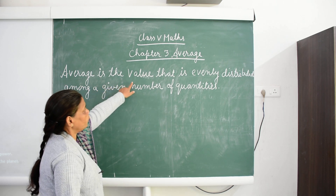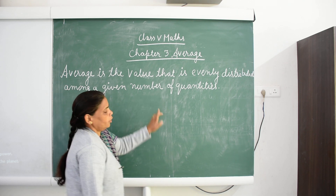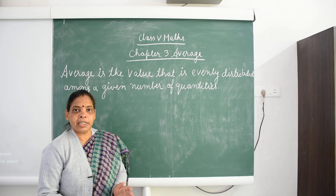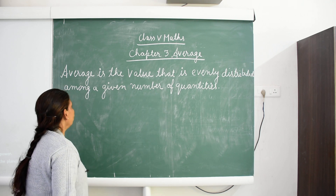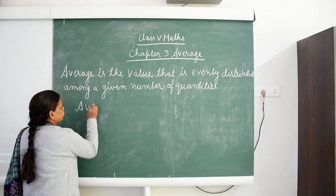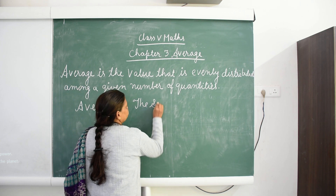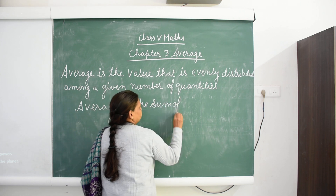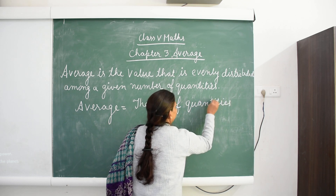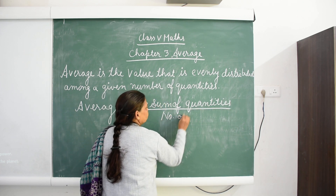Average is the value that is evenly distributed among a given number of quantities. It means average is a value which we can equally distribute in a group of numbers. To find the average, we will use the formula: average is equal to the sum of quantities upon the number of quantities.